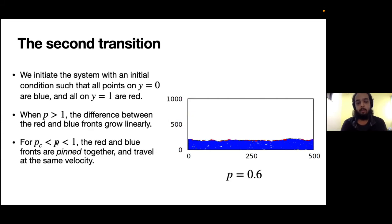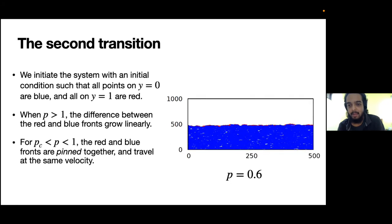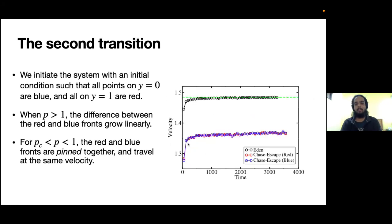However, for any p between pc and one, the red and blue fronts are pinned together and they travel at the same velocity. If you just look at this figure, after some time you see that the red are moving ahead and the blue are very closely following them. You can actually plot the velocities of the red and blue fronts and you will see that the red and blue fronts actually travel at the same velocity. The velocities coincide with each other.